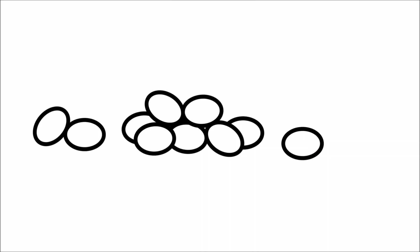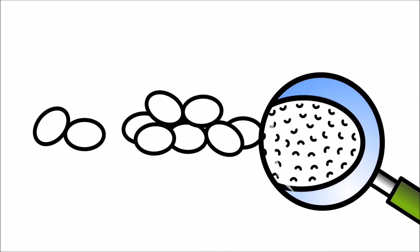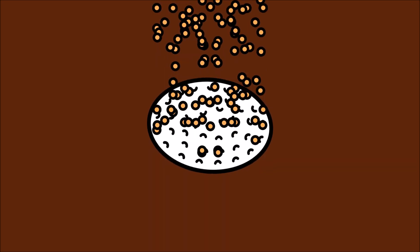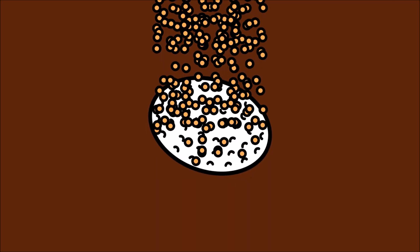The outside coating of Mentos candies have lots of microscopic bumps and craters. Bubbles form inside these tiny areas when we add the Mentos to the Diet Coke.